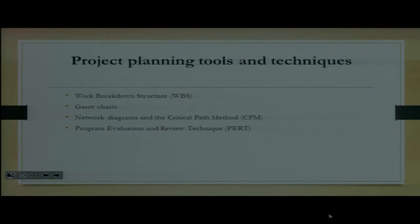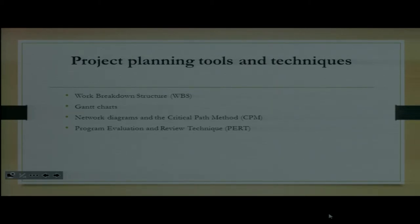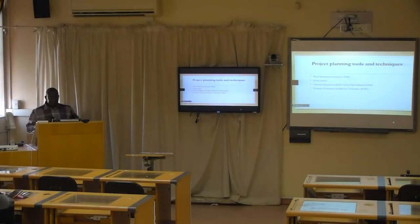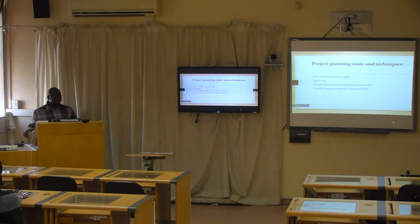The project planning tools and techniques normally used are four: number one is the work breakdown structure; number two is the Gantt chart; number three is network diagrams and the critical path method; number four is the program evaluation and review technique. Because the fourth one is mostly used by engineering people, we are going to explain the first three.